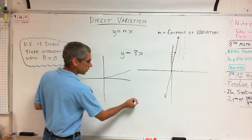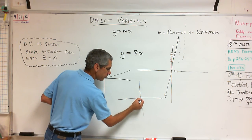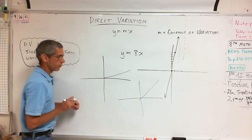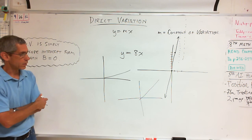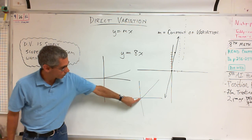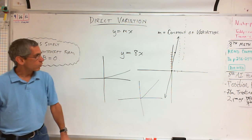Is this an example of direct variation? No. It almost goes to zero, but it doesn't.